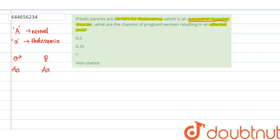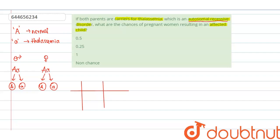During gamete formation, both parents will form two gametes: capital A and small a. Let us draw a Punnett square for these gametes to find the genotypes of the offspring. The gametes of the male — capital A and small a — are written along the top row, and the gametes of the female — capital A and small a — are written in the first column.